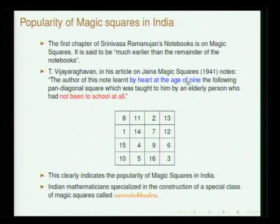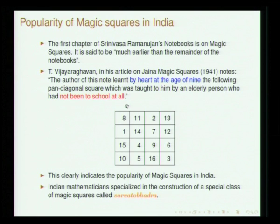To understand the popularity of magic squares — the famous mathematician Ramanujan, in his notebook, starts with magic squares. We will also be referring to Vijayraghavan, who worked out some very interesting properties. In his 1941 article on Jaina magic squares, he notes: 'the author of this note learned by heart at the age of 9 the following pan-diagonal square which was taught to him by an elderly person who had not been to school at all.' This shows that the construction of magic squares has been a part of tradition as a recreational tool.